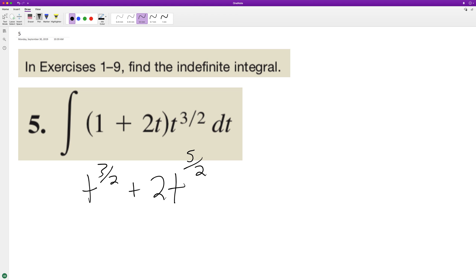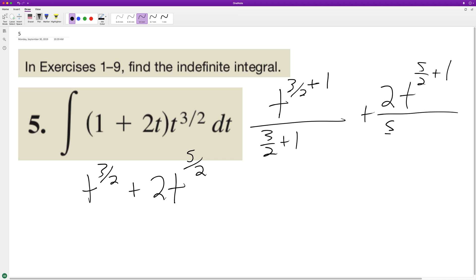All right, so integrating each part, we get t raised to the three halves plus one over three halves plus one, plus two t raised to the five halves plus one over five halves plus one.